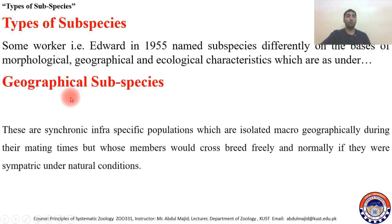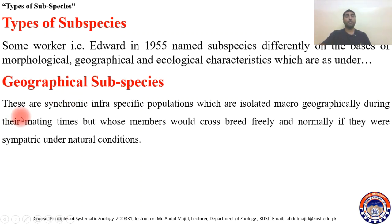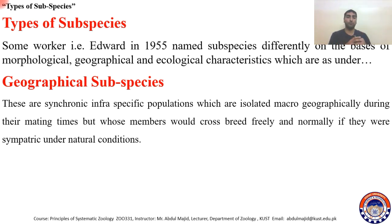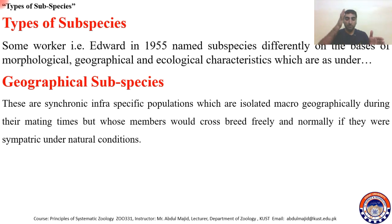The first type is geographical subspecies. These are synchronic — present at the same time — and they are infraspecific populations, meaning sub-populations of the main population, which are geographically isolated macrogeographically due to their mating time.